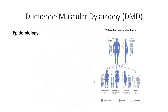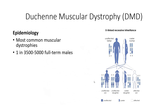The earliest studies of Duchenne muscular dystrophy identified its selectiveness for male individuals. Currently, 1 in 3500 to 5000 full-term male infants are eventually diagnosed with Duchenne muscular dystrophy. This led to the classification of a sex-linked inheritance pattern. With the evolution of the field of genetics and characterization of X and Y chromosomes, the dystrophin gene was localized to locus XP21, about midway along the short arm of the X chromosome.